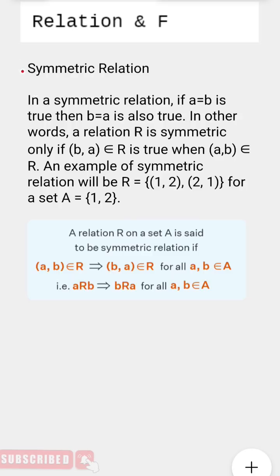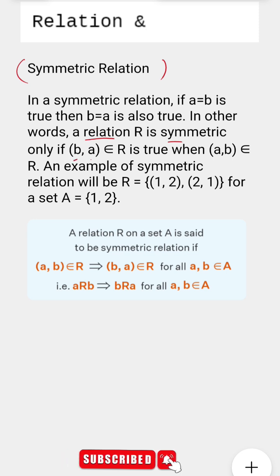So what do you mean by a symmetric relation? In very simple words, if we try to understand what is a symmetric relation, a relation R is symmetric only if the ordered pair which is in the form of B comma A, if it belongs to the relation is true, then also we'll have the ordered pair where A comma B belongs to R.